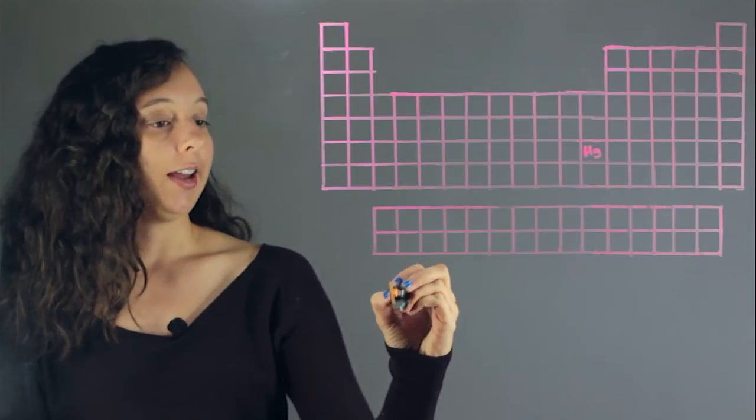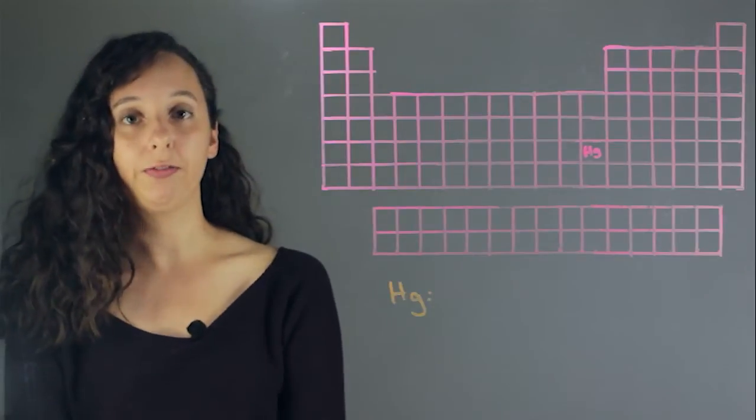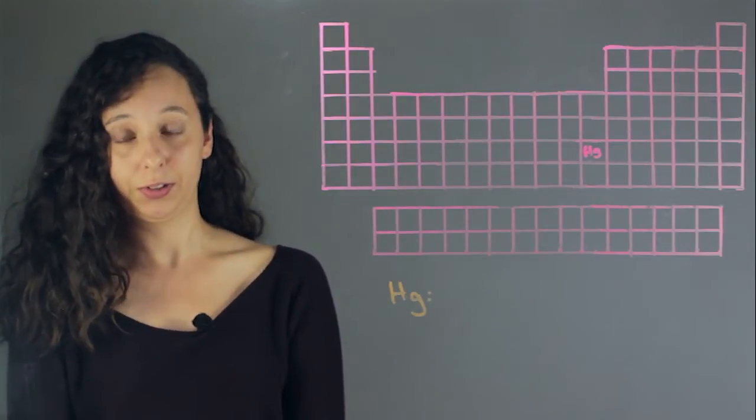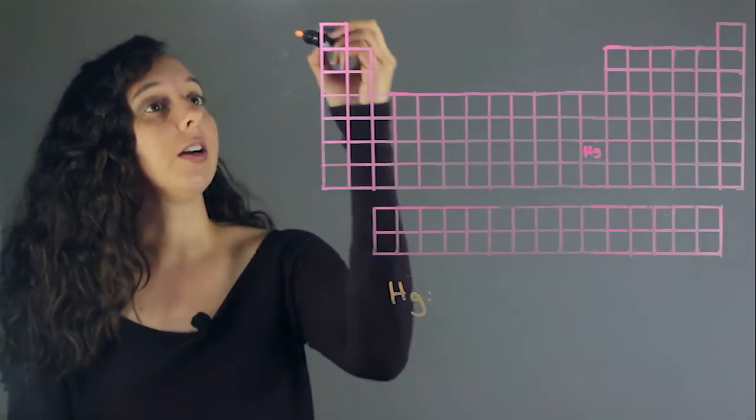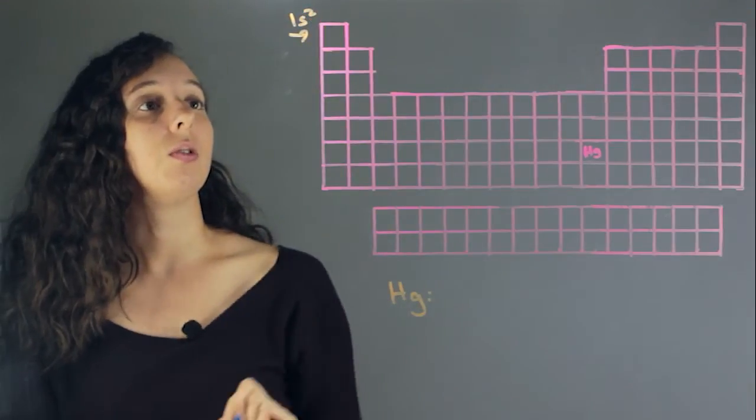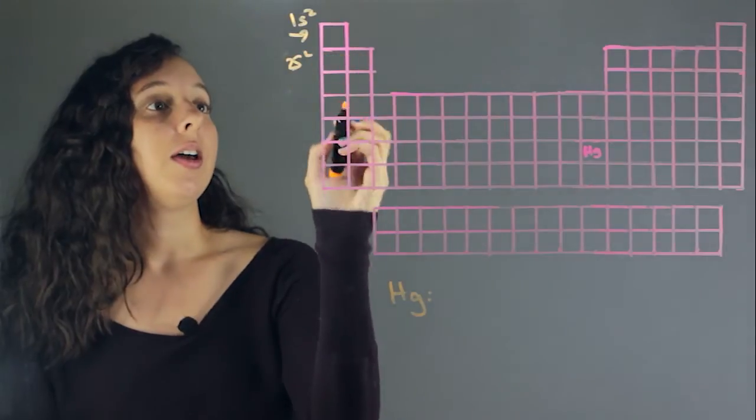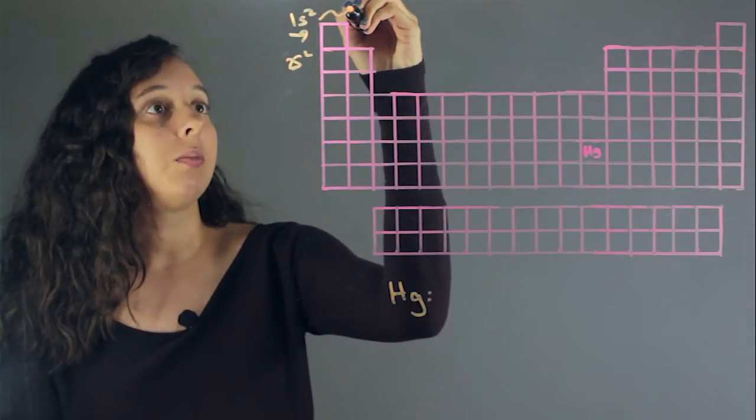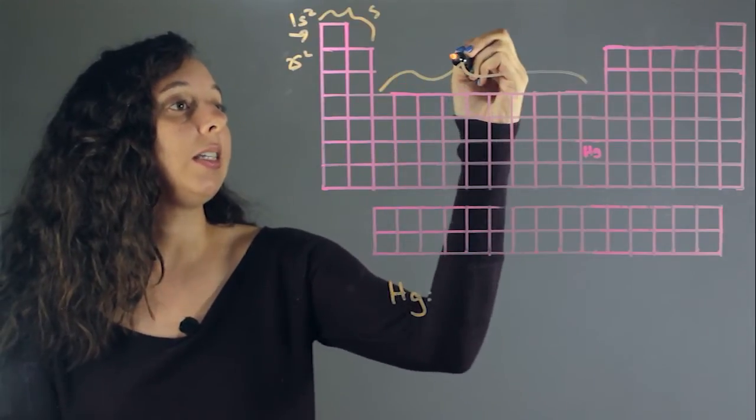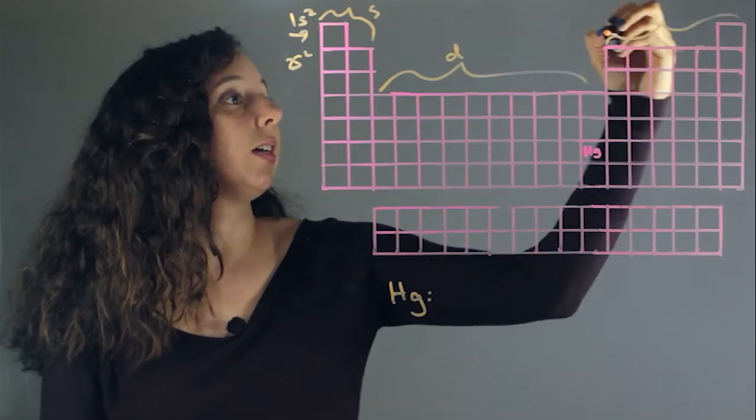And so now we just need to fill in the atomic orbitals. So mercury is pretty far down the periodic table. It's going to be a lot of atomic orbitals, so let's look at our schematic. Up here is our 1s2 orbital, and here is 2s2, and so these columns right here are the s orbitals. This is the d block, and then this 6 over here is the p block.